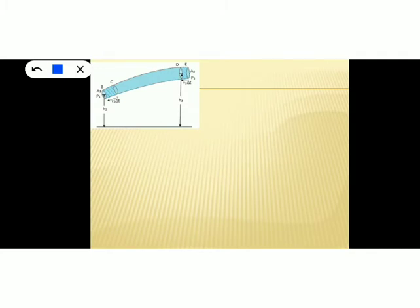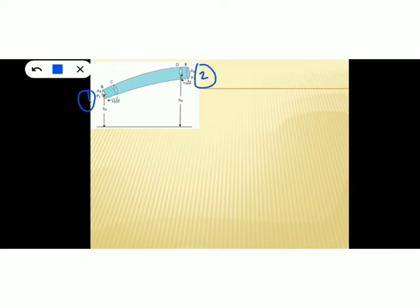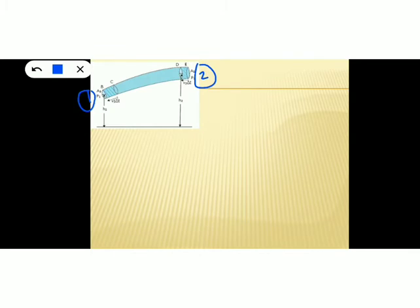Let's prove Bernoulli's principle with the help of a diagram. This diagram shows a tube of non-uniform cross-section. One end of the tube we can consider as region 1 — it is a little bit narrower. The area is different on region 1 and 2. Region 1 is situated at a height H1 from the ground, region 2 is situated at a height H2 from the ground. Let P1 and A1 be the pressure and area at region 1.